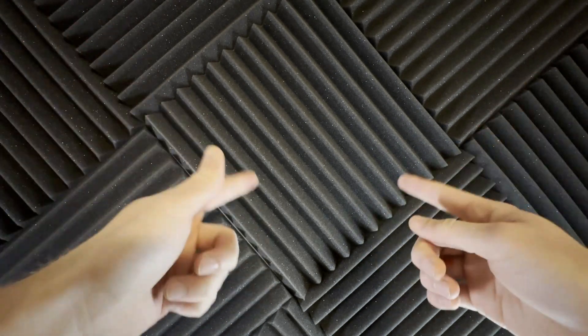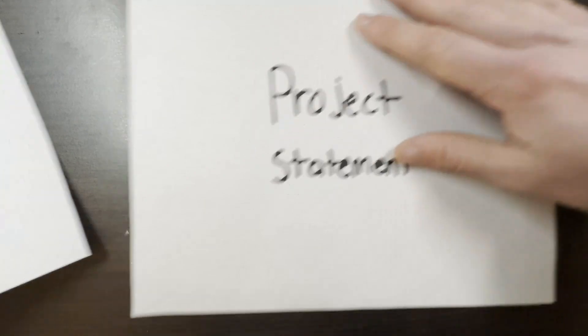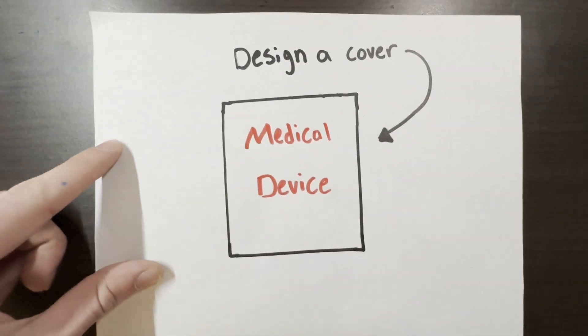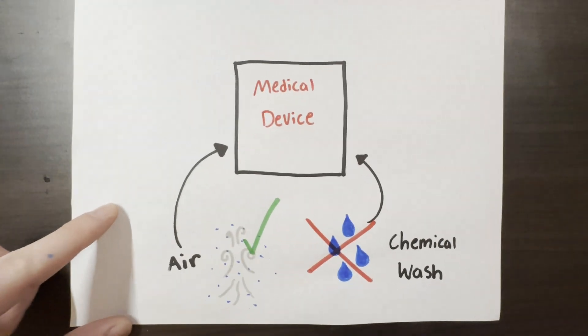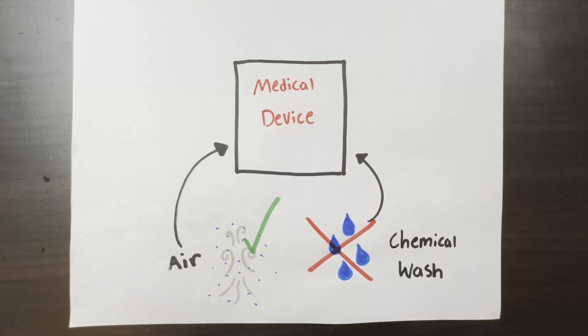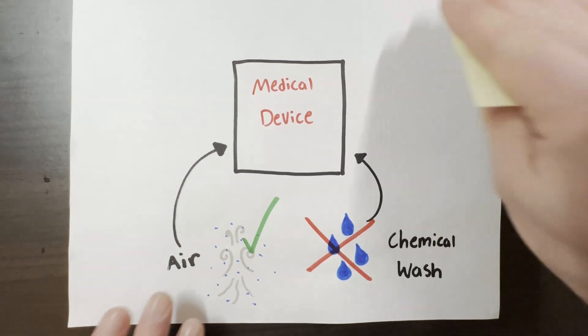Without further ado, let's get into our project statement. GE challenged our team to design a cover for a medical device when undergoing reprocessing methods. These reprocessing methods include submerging the device in a chemical wash for a thorough disinfection.